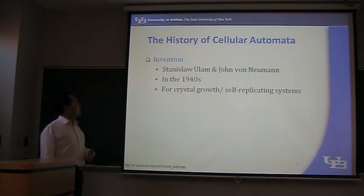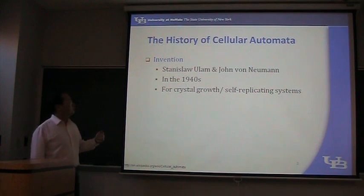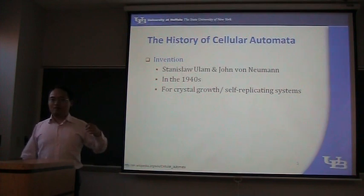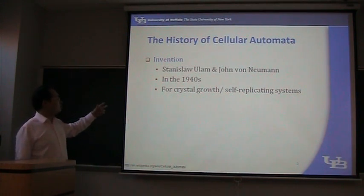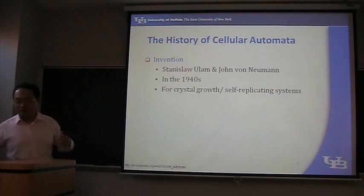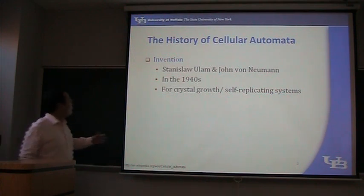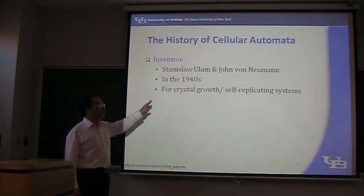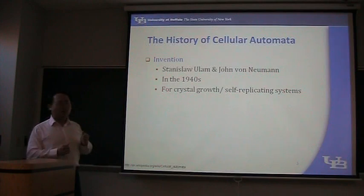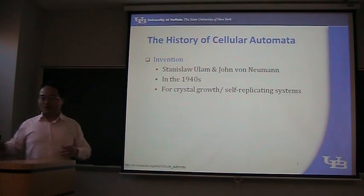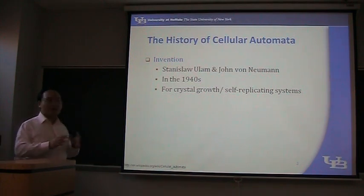History of cellular automata. This was invented by two scientists, Ulam and Von Neumann in the 1940s. I think you are familiar with these two names if you review the previous lectures. In the beginning, cellular automata was developed for Ulam's project for crystal growth and for Von Neumann's project of self-replicating systems, like self-automatic copy machines.